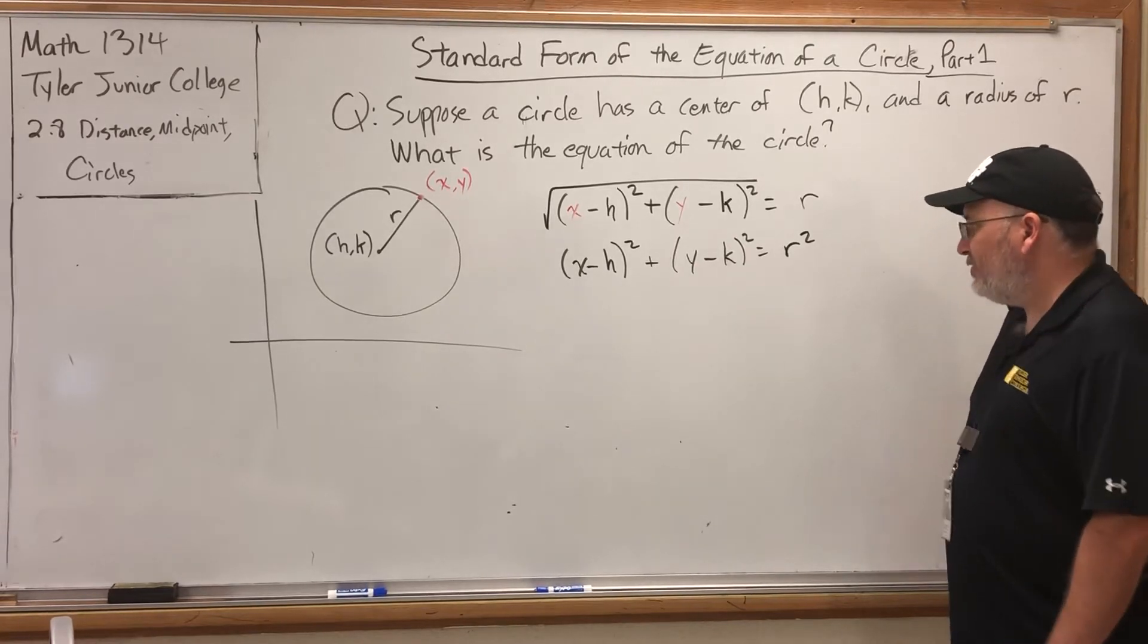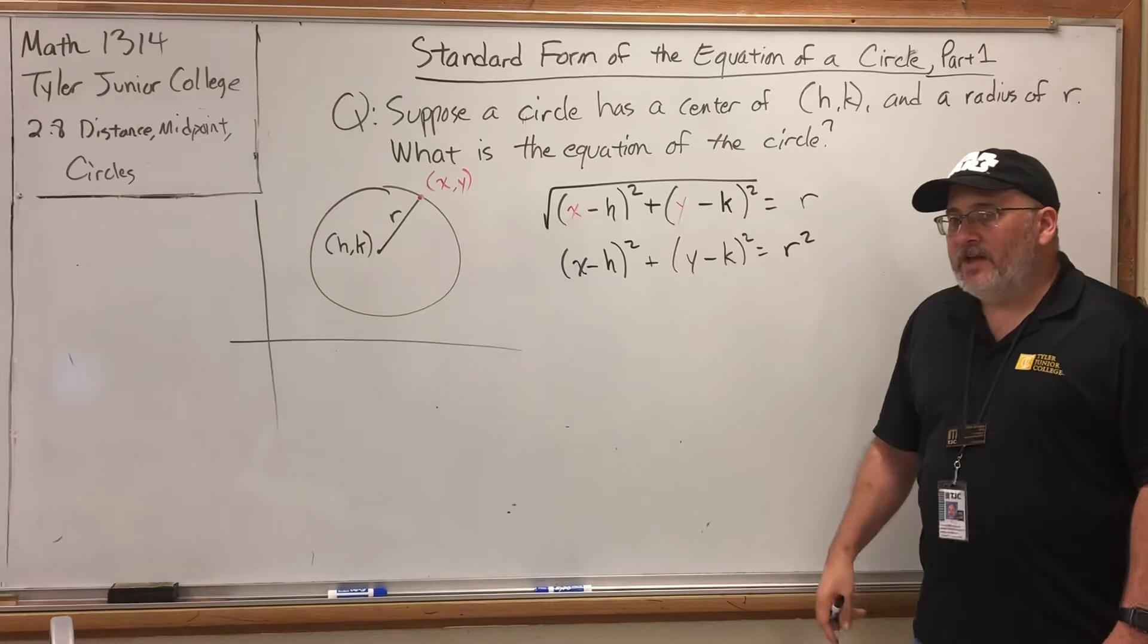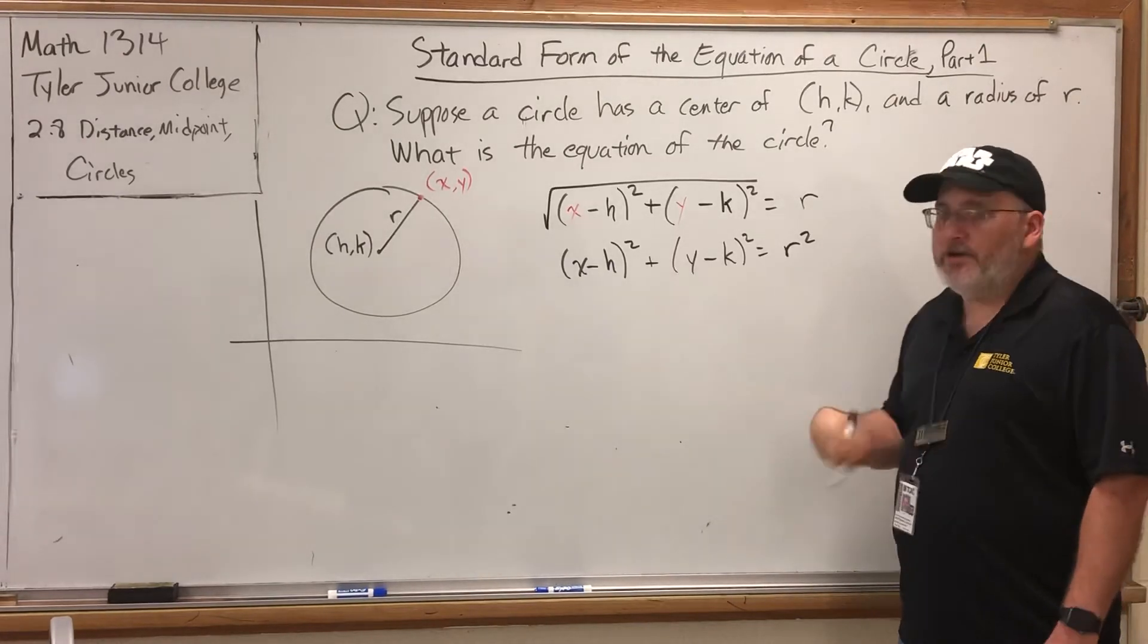If you know the coordinates of the center, h and k, you put them here. If you know the radius, you put it here, and it gets squared.